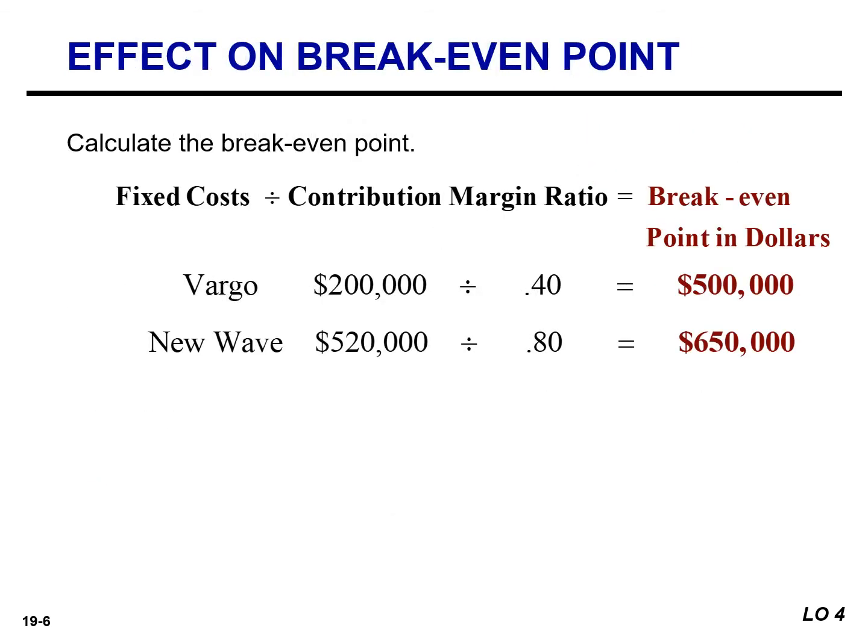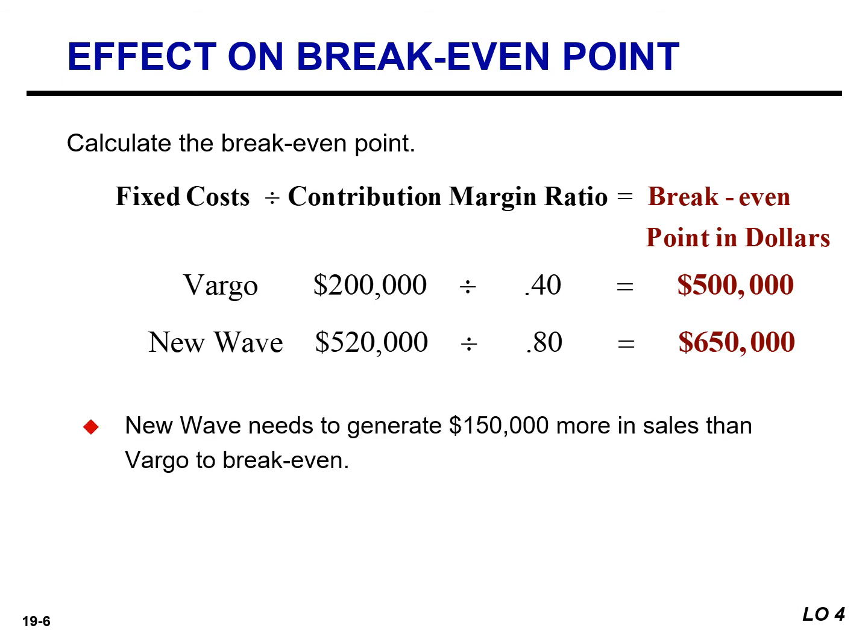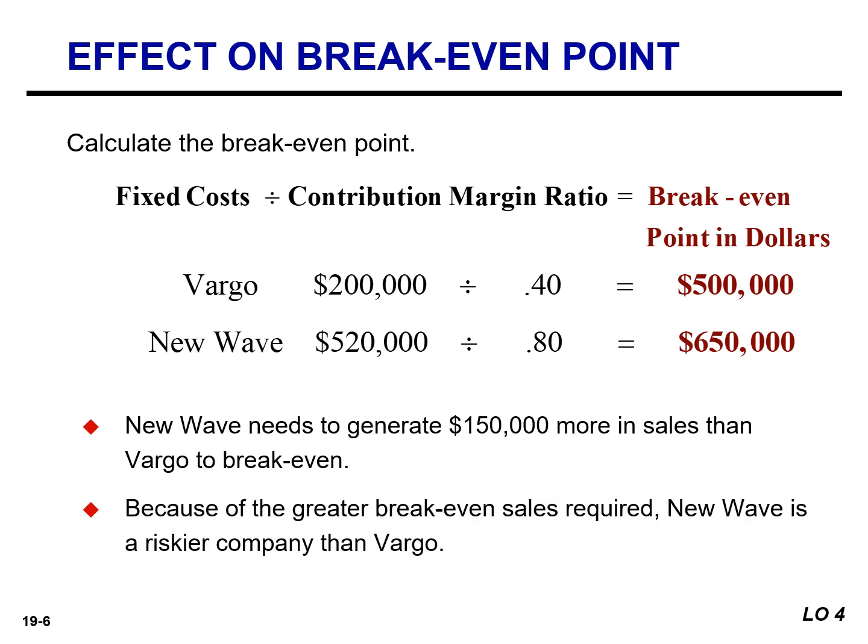The difference in cost structure also affects the break-even point. The break-even point for Vargo is $500,000 and $650,000 for New Wave. New Wave needs to generate $150,000 more in sales than Vargo Video before it breaks even. This makes New Wave riskier than Vargo because a company cannot survive for very long unless it breaks even.